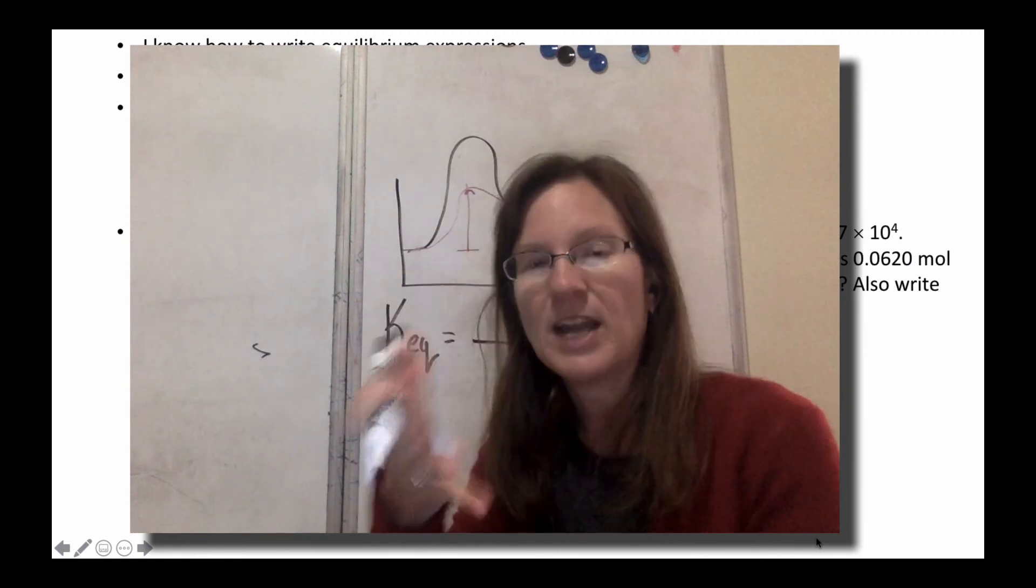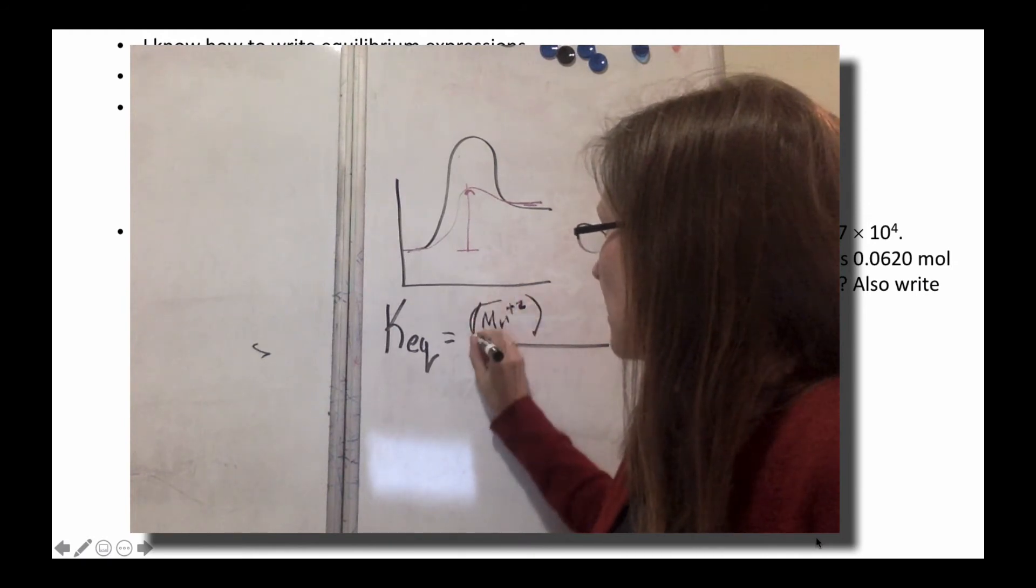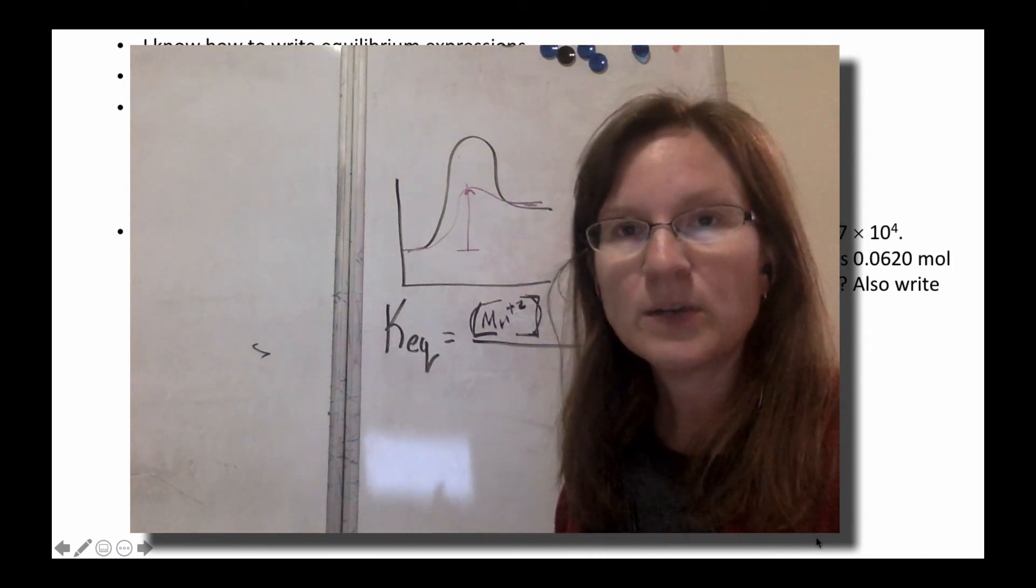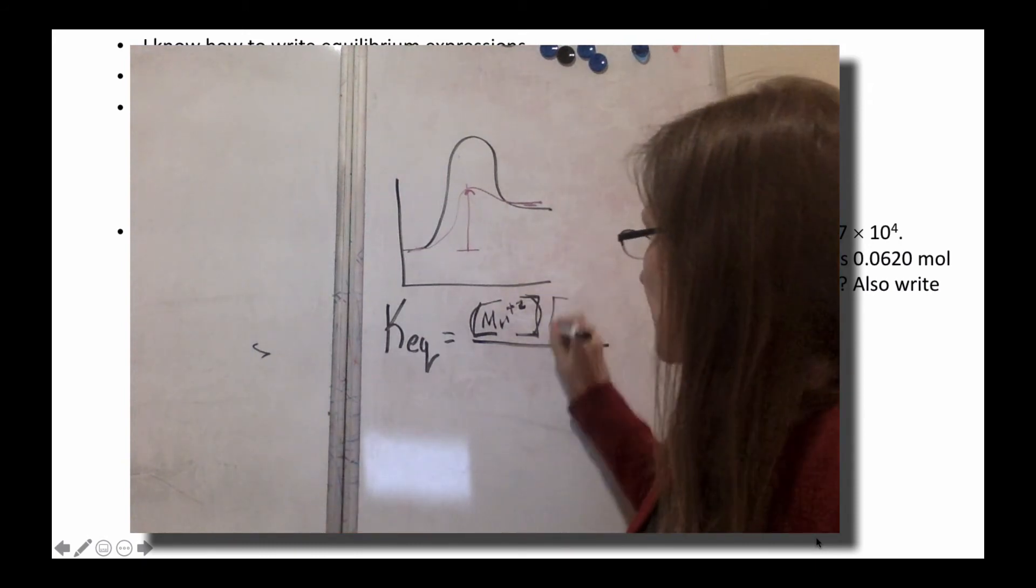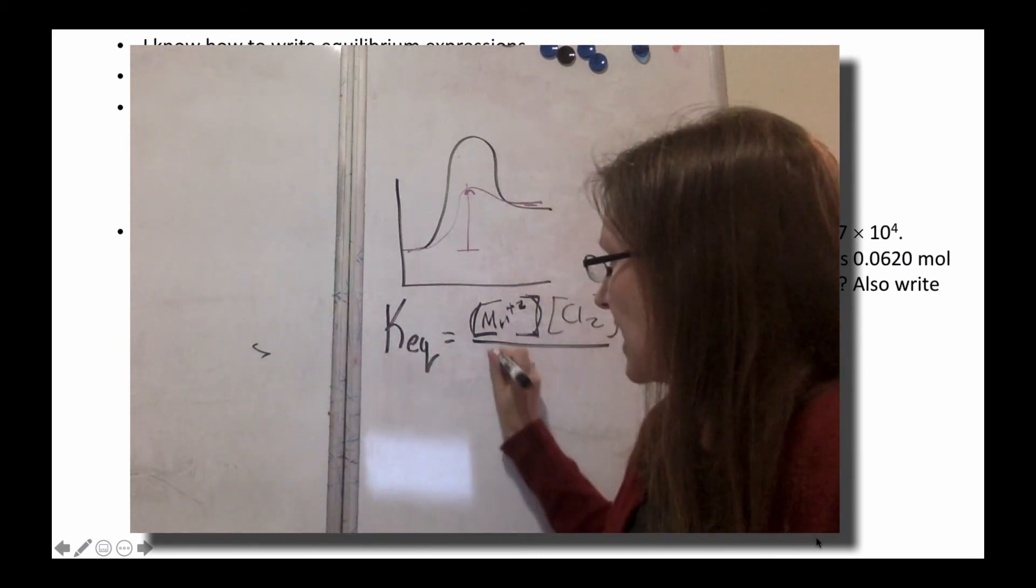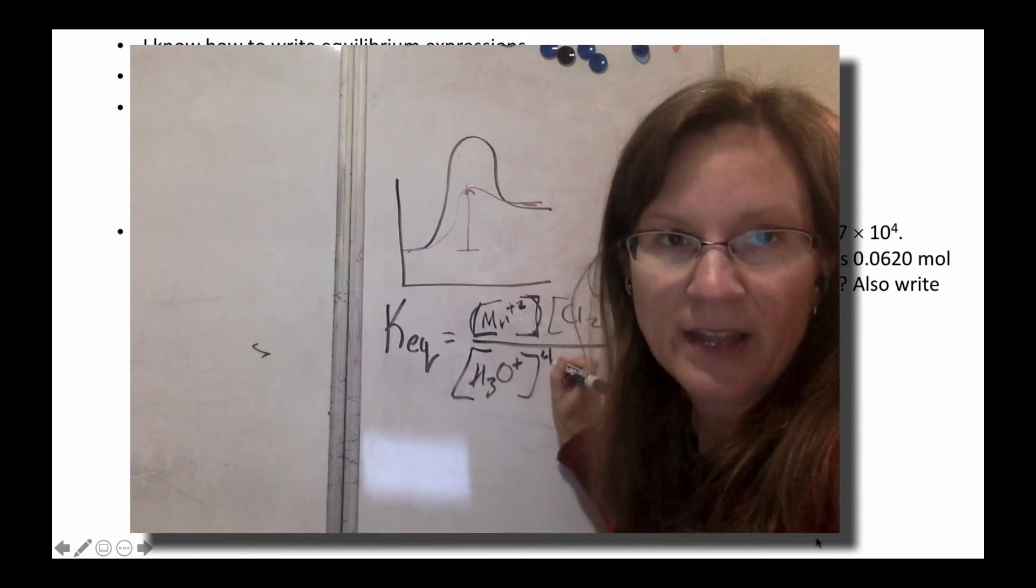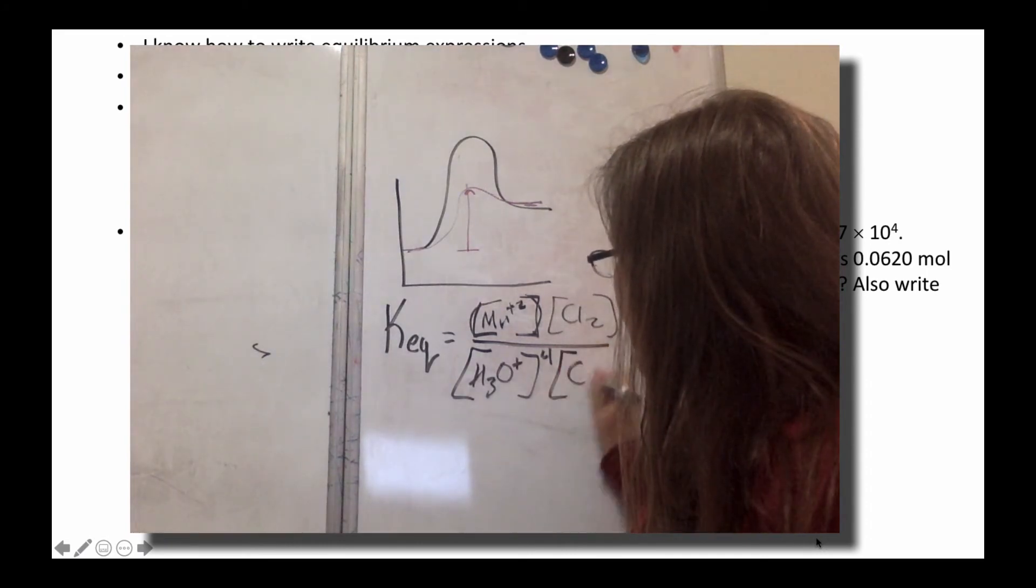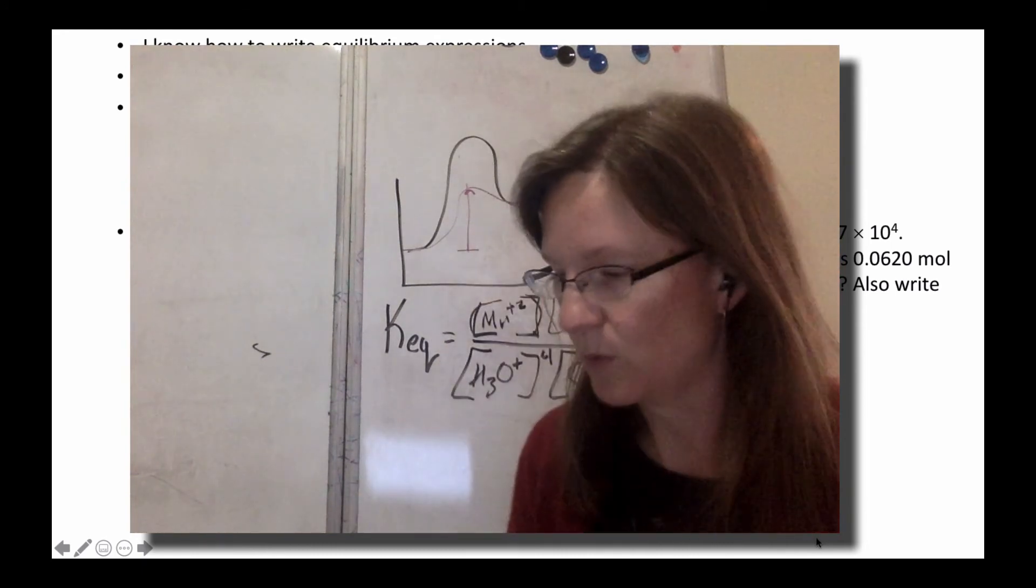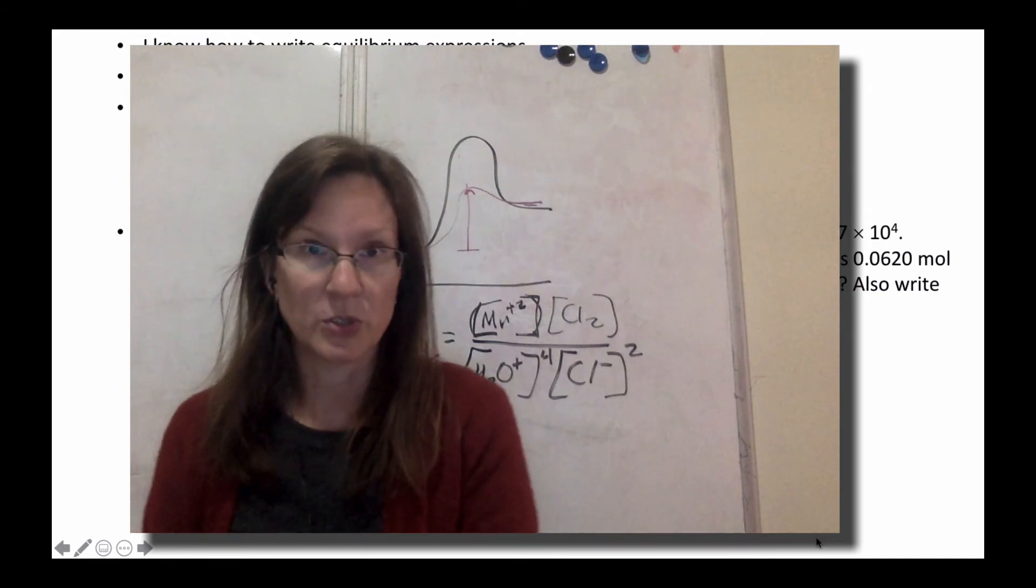So if I look at the product side on this reaction that I'm giving you, Mn2+ is aqueous, so that's part of my K_eq and that's in brackets. No coefficients, nothing raised to a power. Water is a liquid, so I'm not going to include it. And then chlorine is a gas, so I will include it, but it does not have a power. Now going on to the reactant side, I have that H3O+ which is the hydronium ion, and I'll raise that to the fourth. Then I have the Cl- ion, and I'll raise that to the two or square it. And then MnO2 is a solid, so I won't include that. So that is what an equilibrium expression looks like—no solids or liquids included.